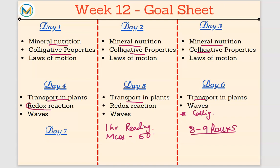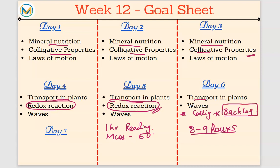Redox Reaction is a small topic, so I have allotted only two days for it. There is no Chemistry scheduled on the sixth day, so if you complete Colligative Properties in three days and Redox in two, you can use the sixth day to cover any backlog or revise weak areas. If not, you can use that day to extend Colligative Properties.